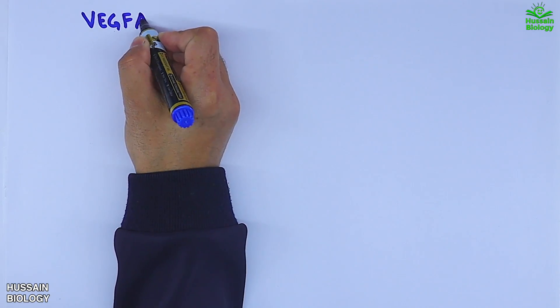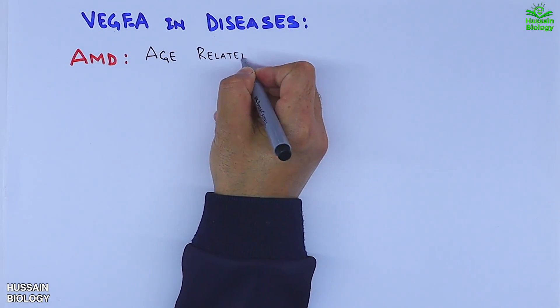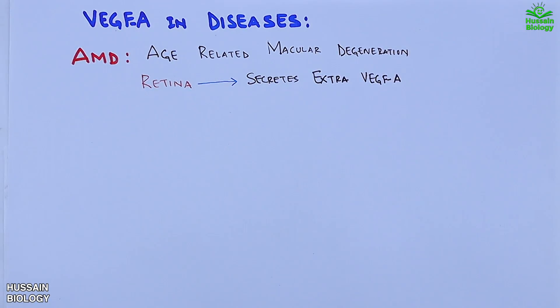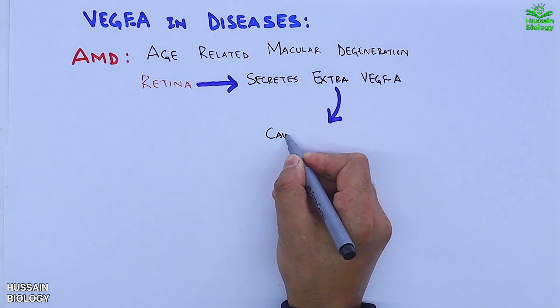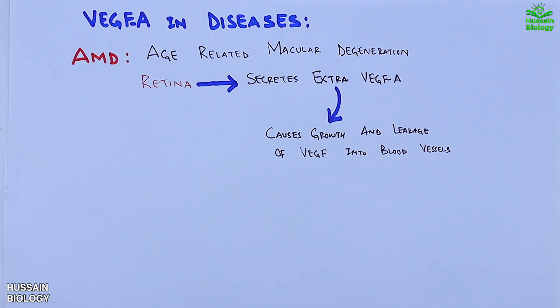VEGF-A is also involved in diseases like AMD, age-related macular degeneration, where the retina secretes extra abnormal volumes of VEGF-A which causes growth and leakage into blood vessels. Second is proliferative diabetic retinopathy, and third is diabetic macular edema.